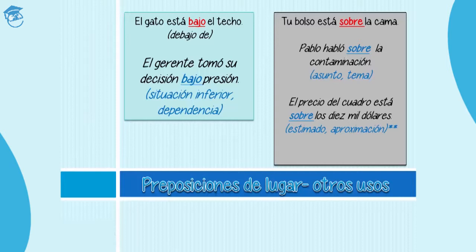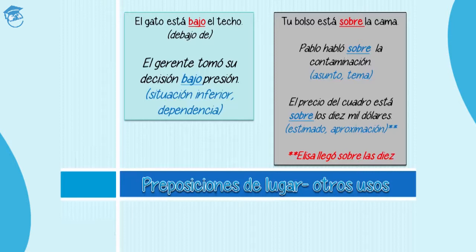But, attention, because there's also another example when you use sobre for something estimated. When it's a period of time, an estimated period of time. For example, Elisa llegó sobre las 10 — Elisa arrived at about 10. Sobre las 10 — she arrived after 10, but you don't know exactly what time she arrived. So when you're giving this kind of estimated quantity of time, you might also use sobre.